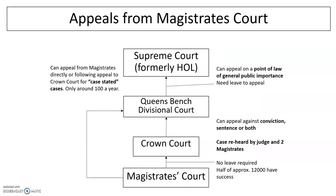In terms of appeals, we'll start with appeals from the Magistrates' Court. You can see the diagram and hierarchy of courts going upwards to the Supreme Court, which was formerly the House of Lords. You generally need leave to appeal from the Magistrates' Court to the Queen's Bench Divisional Court, from the Crown Court to the Queen's Bench Divisional Court, and from the Queen's Bench Divisional Court to the Supreme Court. Leave means you need permission. No leave is required to appeal from the Magistrates' Court to the Crown Court, however. Approximately half of 12,000 cases have some success in getting leave. In the Crown Court, hearing appeals from the Magistrates' Court, the case will be heard by a judge and two magistrates, and you can appeal against your conviction, sentence, or both. You can also appeal on a point of law of general public importance to the Supreme Court — again requiring leave. You can appeal directly from the Magistrates' Court to the Queen's Bench Divisional Court via a process called case stated, but there are only around 100 of these a year.